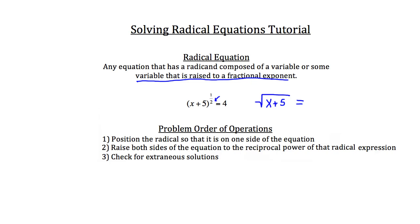So the square root of x plus 5 is equal to 4 in our case. Step 2 is to raise both sides of the equation to the reciprocal power of that radical expression. Ours was originally raised to the 1/2 power, so we raise the whole expression to the reciprocal of 1/2, which is 2. We square this equation, and anything we do to one side we must do to the other, so we square the other side as well.